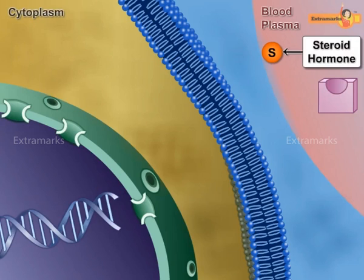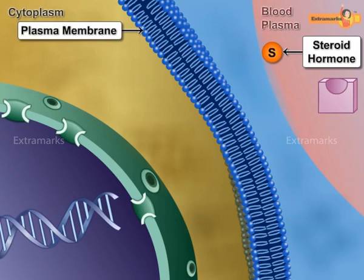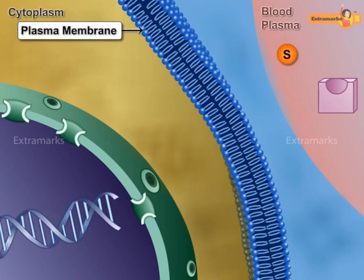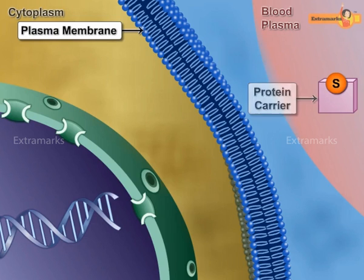Cortisol is a lipid soluble, lipophilic hormone. Hence it readily passes through the lipid bilayer of the plasma membrane of the target cell and enters the cell. The steroid hormones are attached to carrier proteins and they travel in the blood.